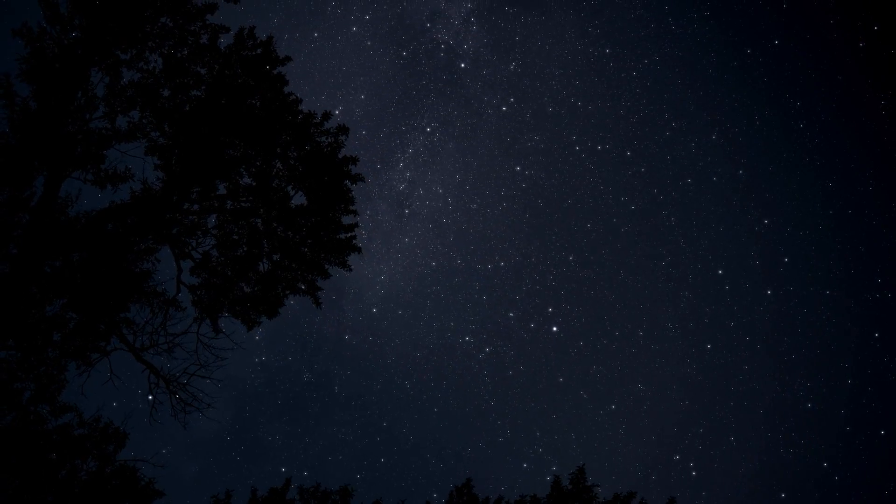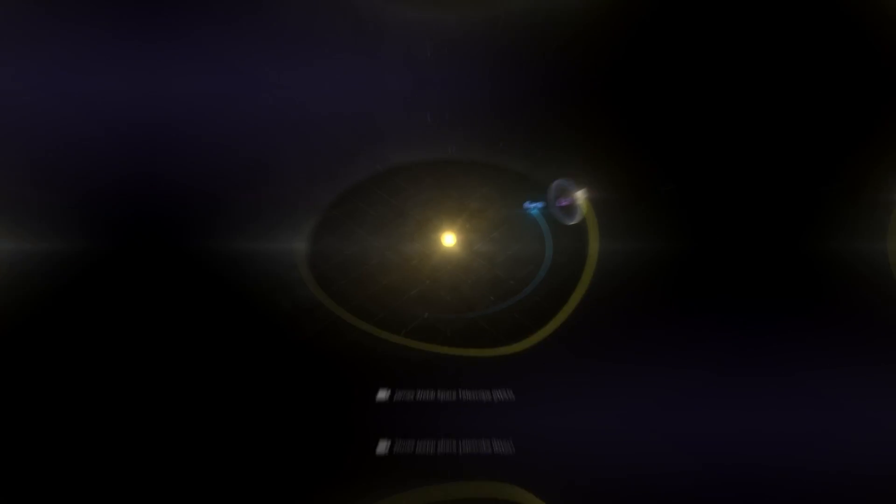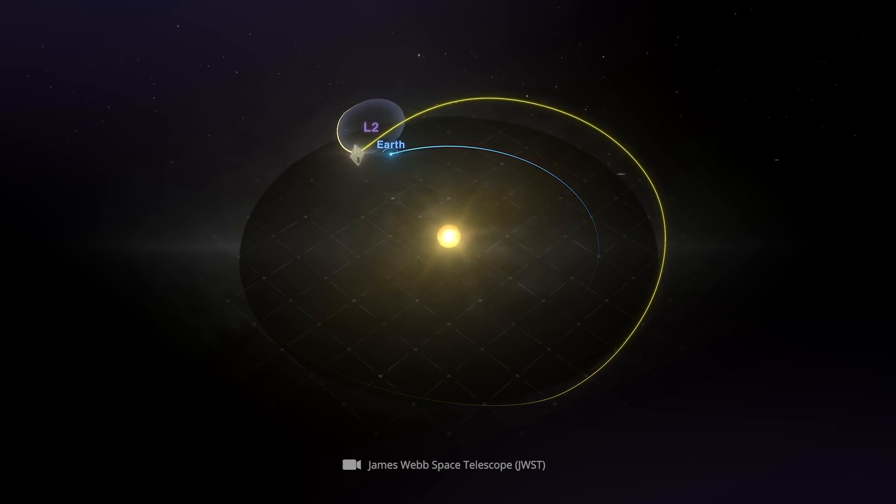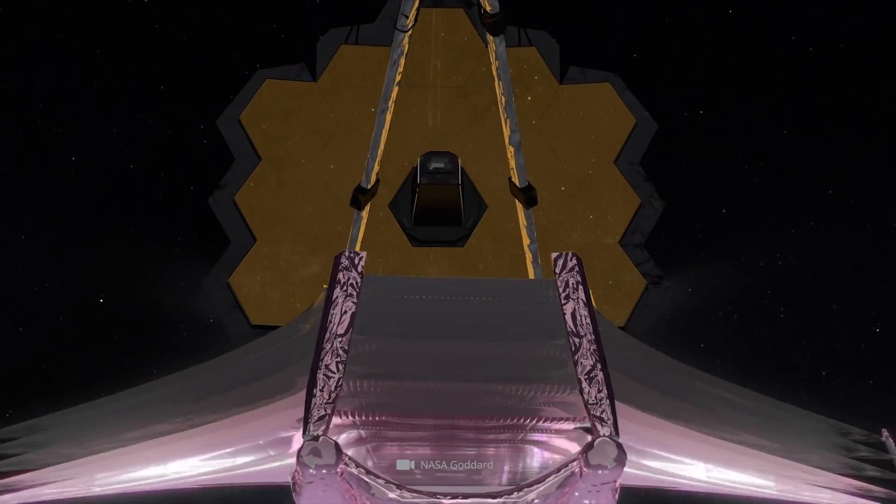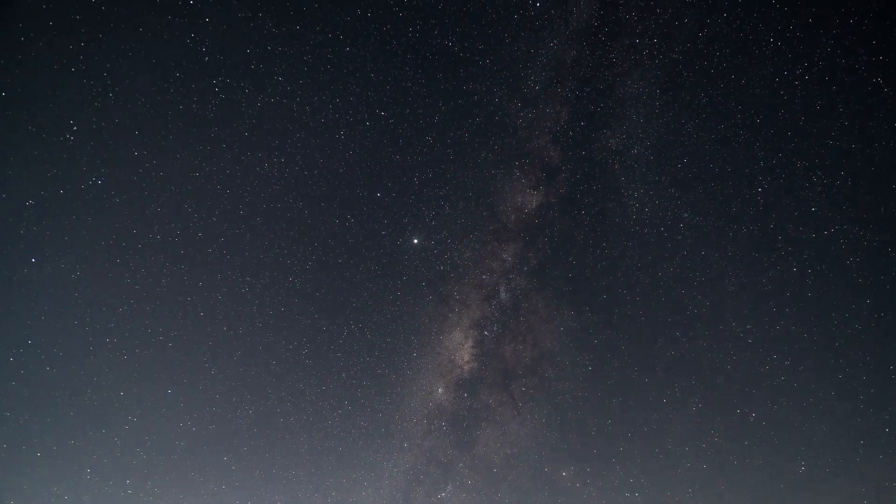James Webb discovers a galaxy that could change physics. In July of this year, the time had finally come. After the James Webb Telescope had already reached its orbit in January, NASA published the first images and data.